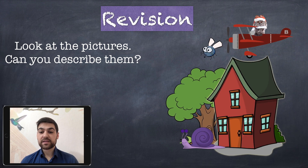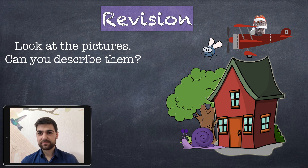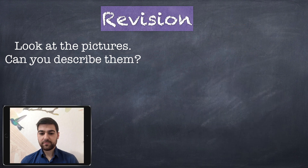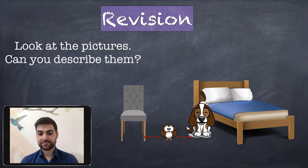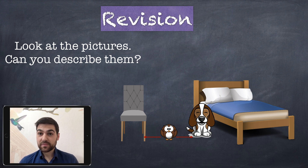Where is the snail? The snail is sleeping under the tree. Buzz and Peter the Pilot are flying above the house and above the tree. Where is Chivy the dog? Chivy the dog is sitting next to the bed.